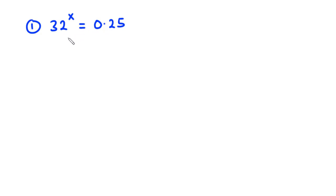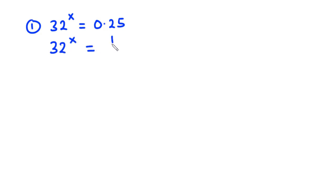Now we can simplify this to have 32 exponent x equals 1 over 4. Now 1 over 4 is the same as 0.25. And this is equal to 1 over 2 exponent 2.